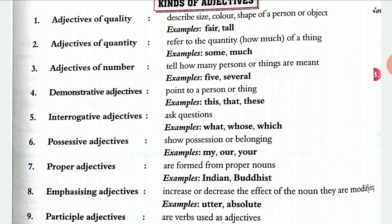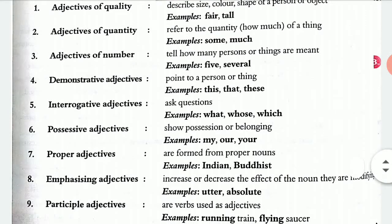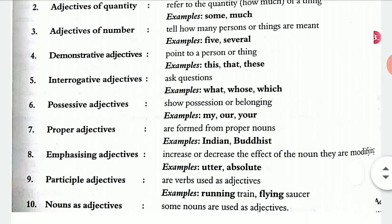Number four is demonstrative adjectives. Demonstrative adjectives point to a particular person or thing. As you may be aware from reading about pronouns, the examples are this, that, and these, used as adjectives. For example, in the sentence 'This is a book,' the word 'this' is a demonstrative adjective.